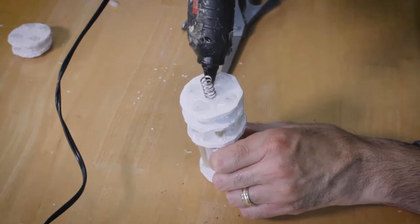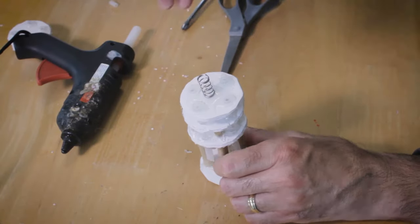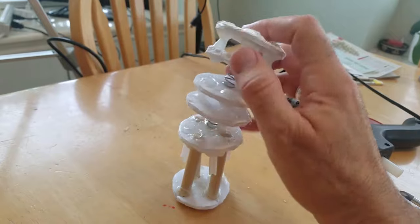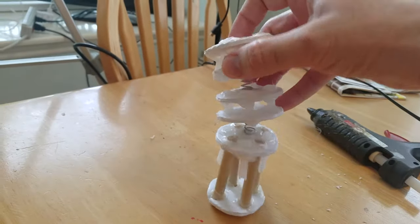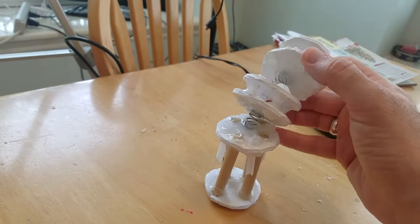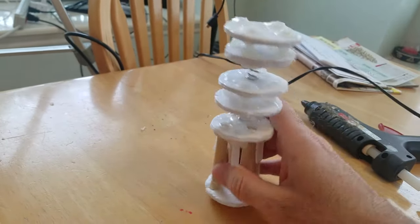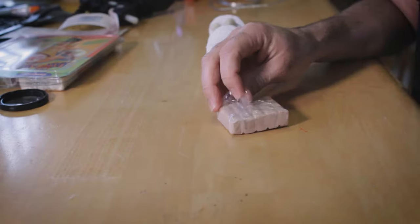And as always, be careful not to burn yourself with the glue. You can see I'm kind of like parsing out the glue a little bit to give a little more hold to the rest of the mechanism. And here we have it. It's our bending mechanism. You can see it's pretty sturdy. Hot glue is your friend.